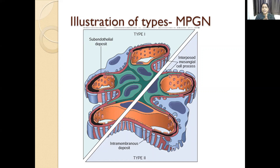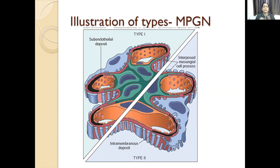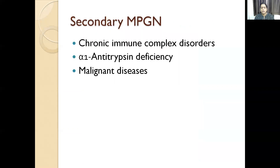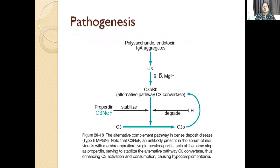The age group affected is children and adults with membranoproliferative glomerulonephritis. Secondary MPGN is usually associated with chronic immune complex disease, alpha-1 antitrypsin deficiency, and malignant disease. What is happening here is hypocomplementemia — there is decreased synthesis of complement by the liver. As a result, there is absolutely no function of the complement.